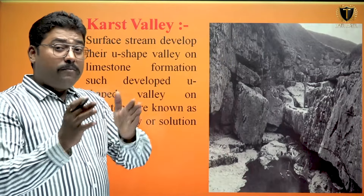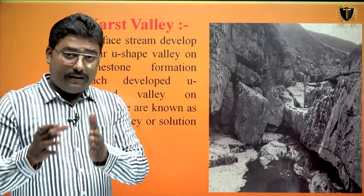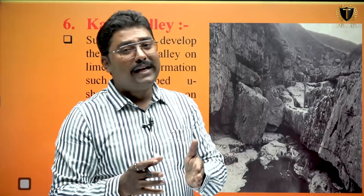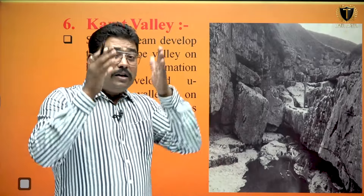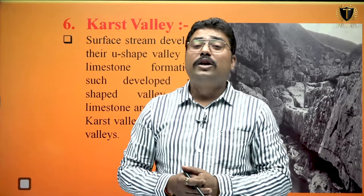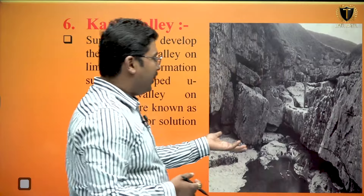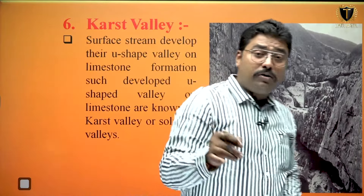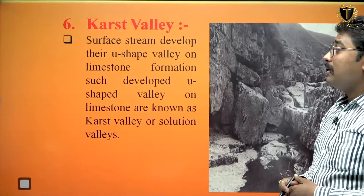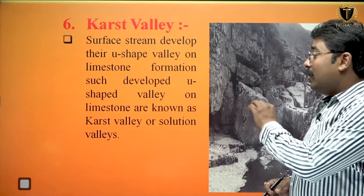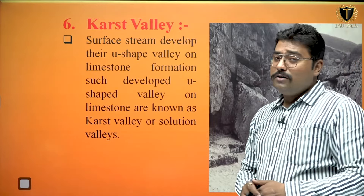After this you will find the karst valley. Just like valleys formed by rivers or glaciers, this valley will be found by running surface water in the karst area where the sides of the valley will be very vertical, resembling a U-shaped valley. Surface streams develop U-shaped valleys on the limestone formation — such valleys are known as karst valley or solution valleys.